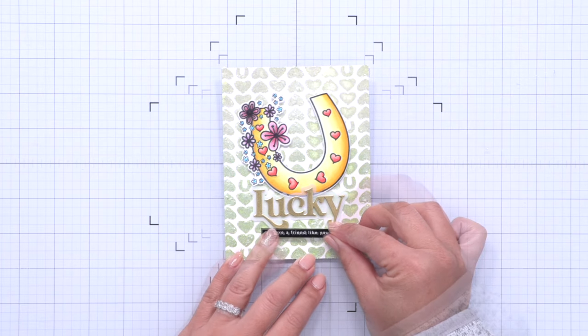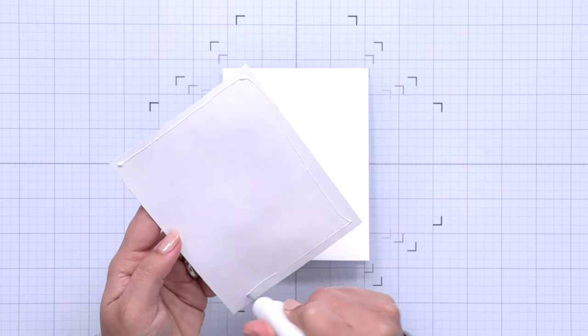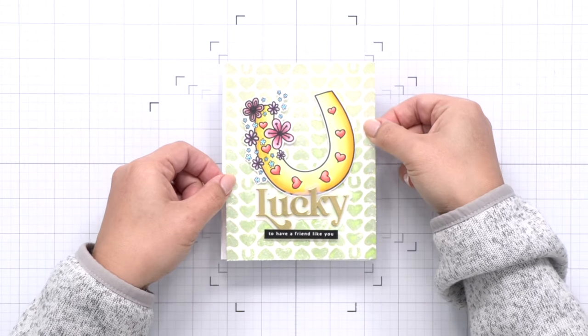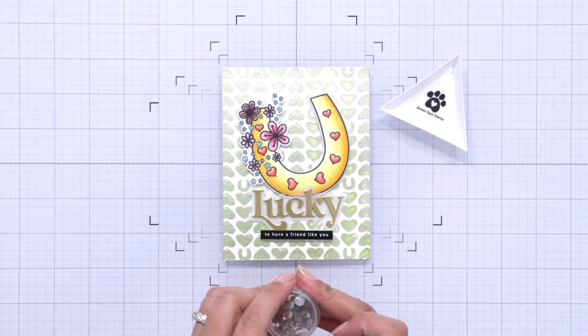Then using a sentiment from the reverse lucky set I am adding a strip of sub sentiment to the bottom of the word lucky and I use a foam strip that's new from Simon Says Stamp as well to adhere that sentiment strip.